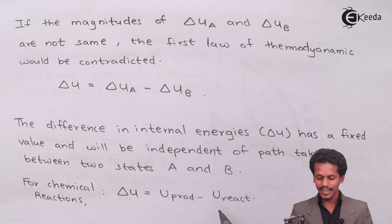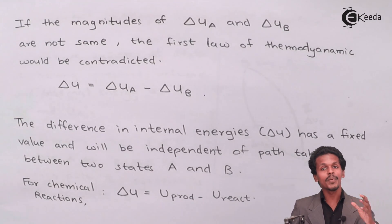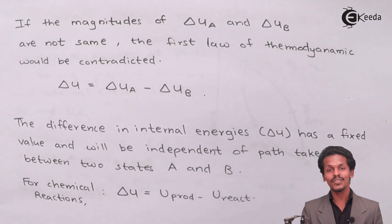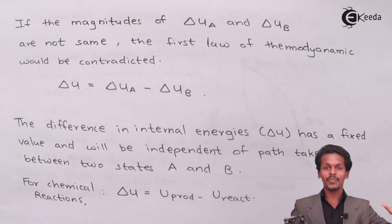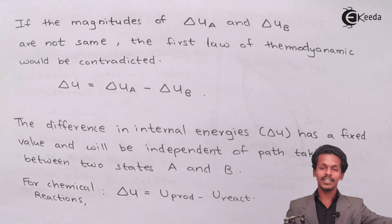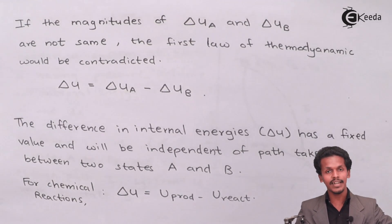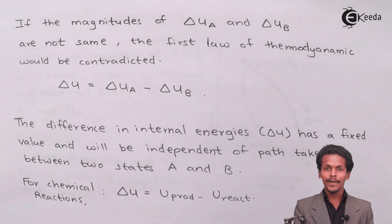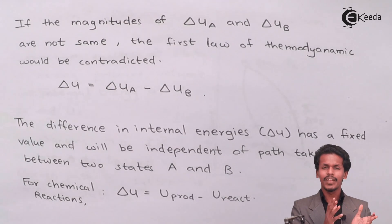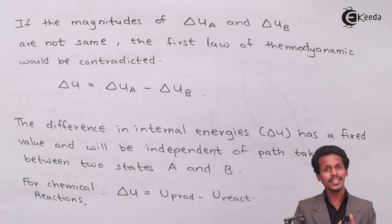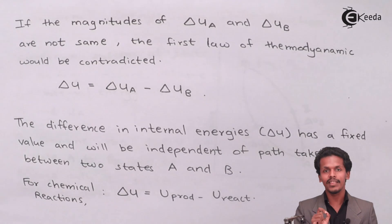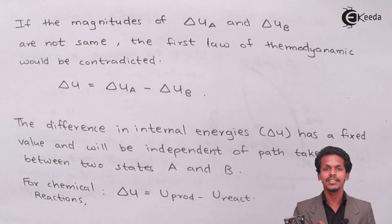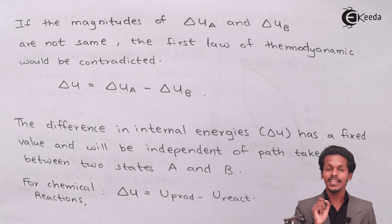For a chemical reaction, delta U is simply U of products minus U of reactants. We calculate the internal energy of the products, subtract the internal energy of the reactants, and that gives us the change in internal energy. We are not concerned with the path of the reaction — that is why internal energy depends on the state, not the path.